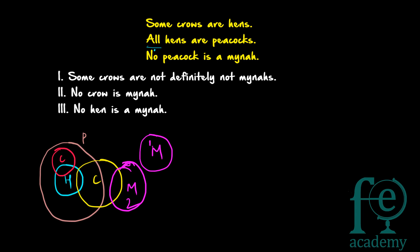Now let's go to our conclusions. First conclusion: some crows are definitely not minas. Let's see the yellow circle — that is one possibility for crow. In the yellow circle there are some crows which are not minas. This green part represents the crows which are definitely not minas. Now take the second case — the red circle also represents crows, and in the red circle all crows are not minas. So some crows are definitely not minas is satisfied by both circles. Both the yellow circle and the red circle lead to conclusion 1, so conclusion 1 will definitely follow.